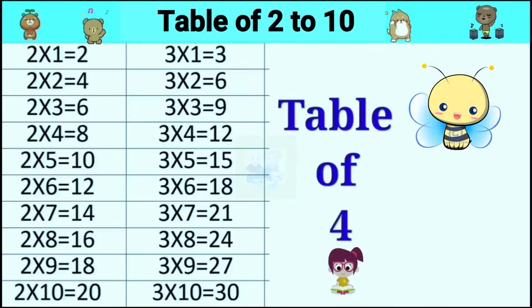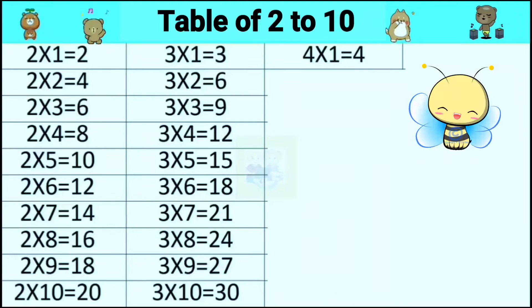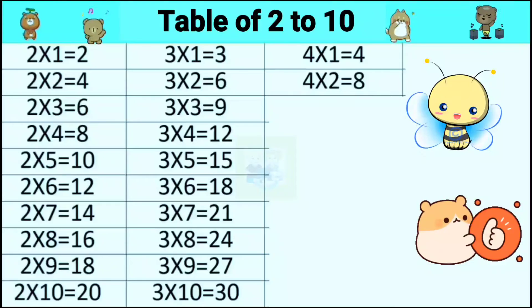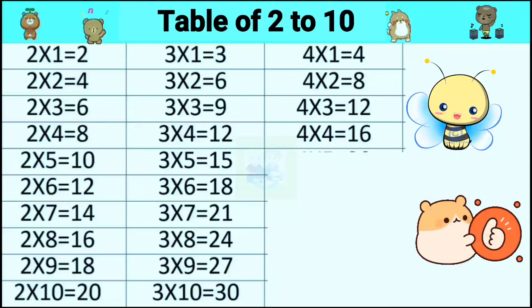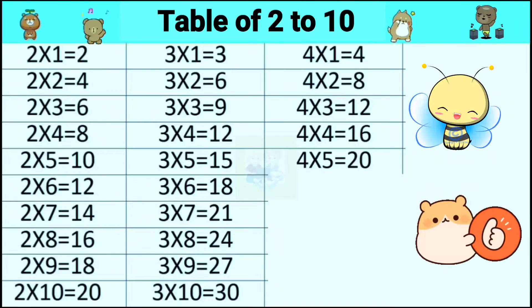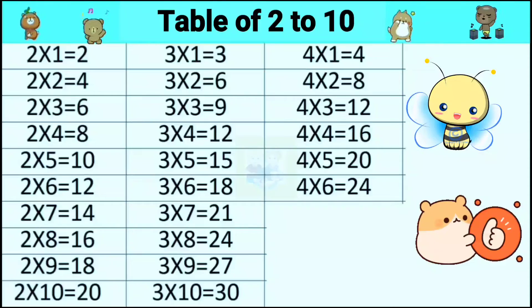Table of 4. 4 ones are 4, 4 twos are 8, 4 threes are 12, 4 fours are 16, 4 fives are 20, 4 sixes are 24.